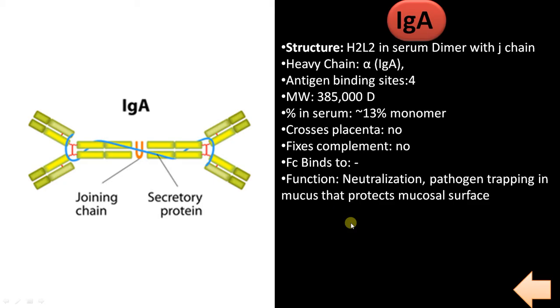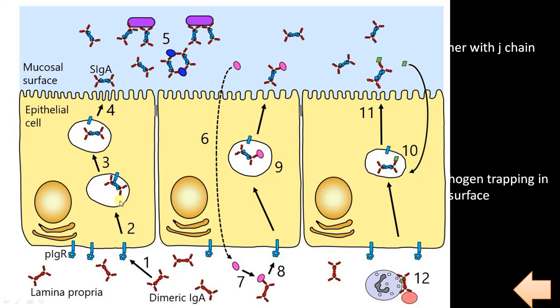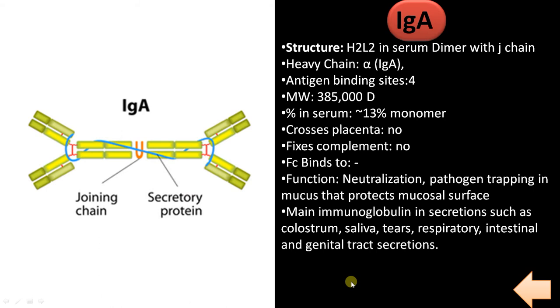Functions include neutralization and forming the major antibody involved in mucosal defense that protects mucosal surfaces. IgA can directly bind to pathogens or epitopes and causes neutralization. It is the major immunoglobulin in secretions such as colostrum, saliva, tears, gastrointestinal tract, and genital tract secretions.